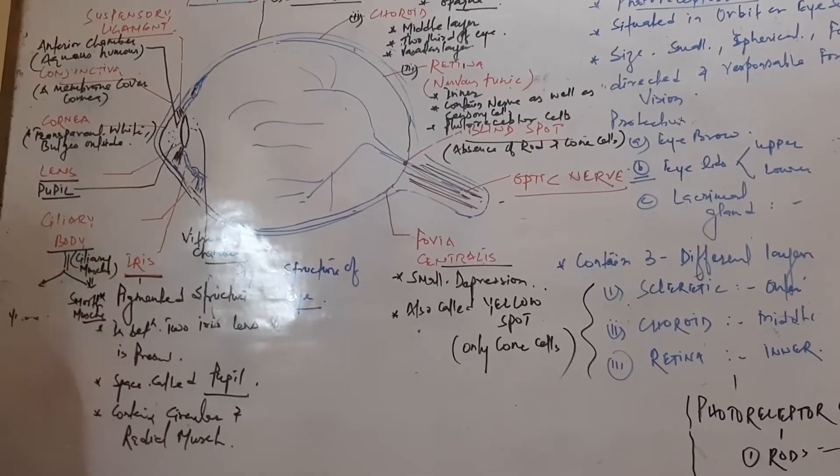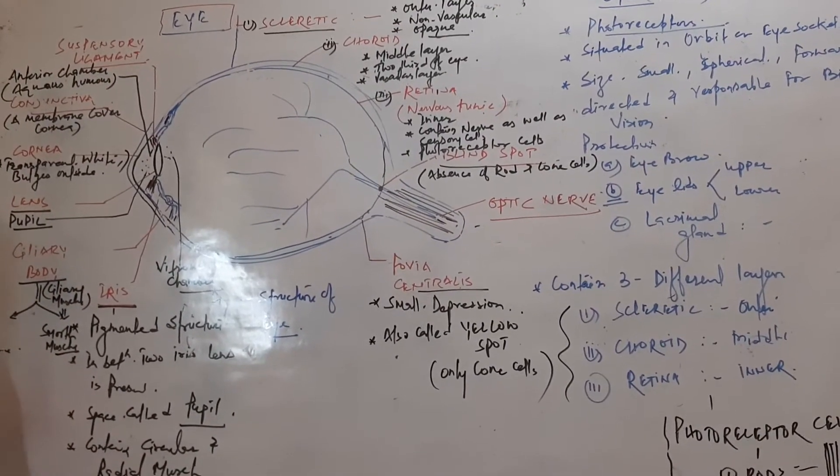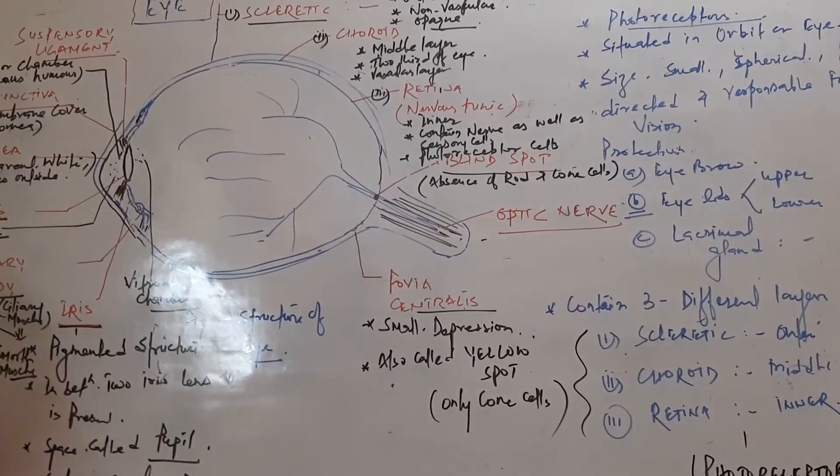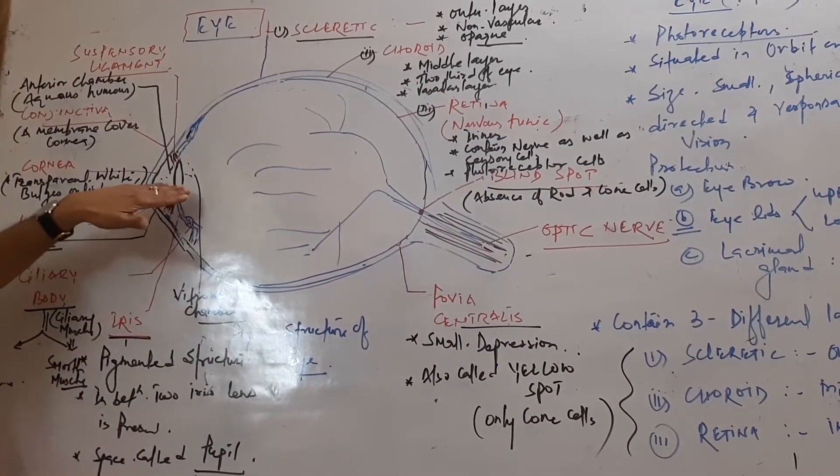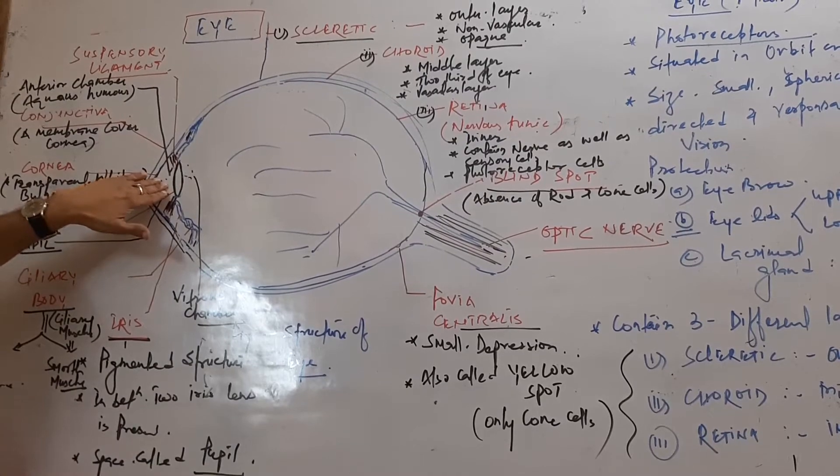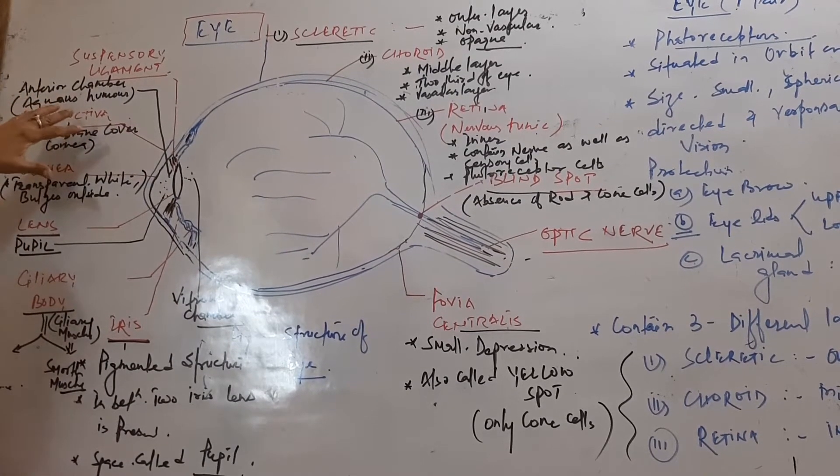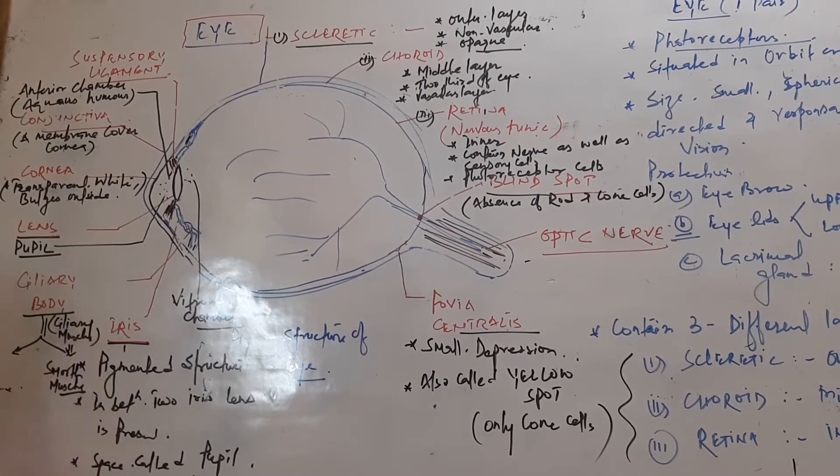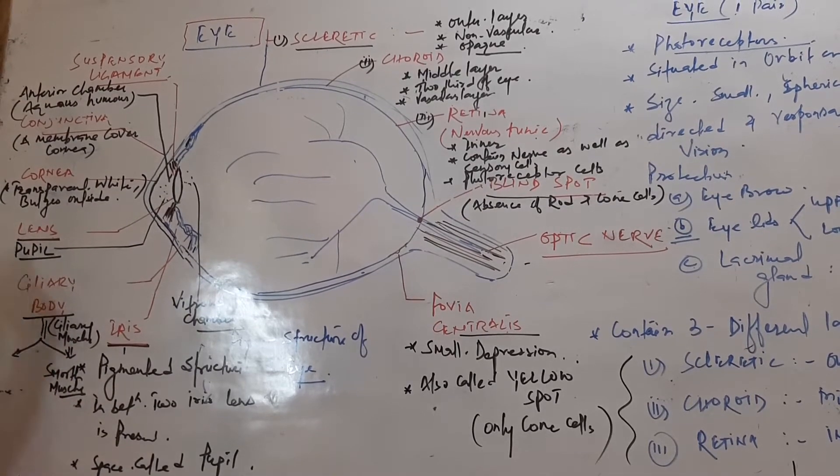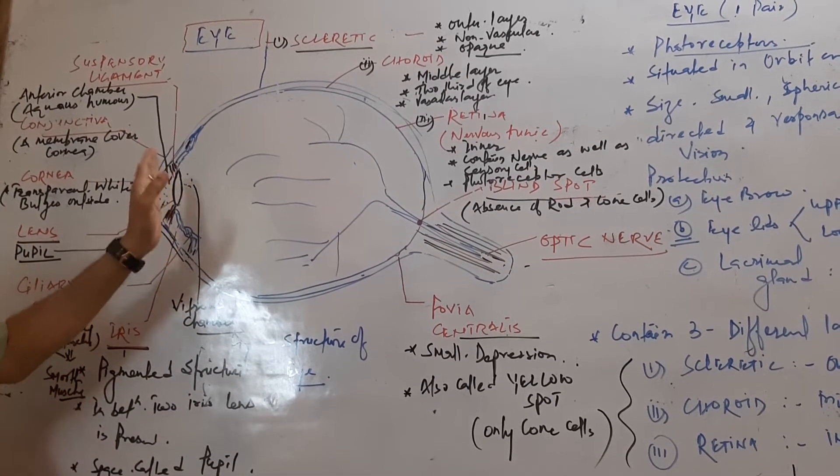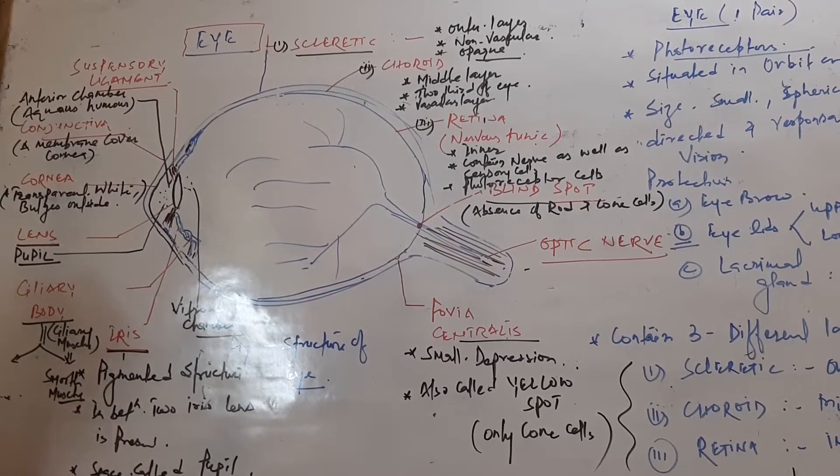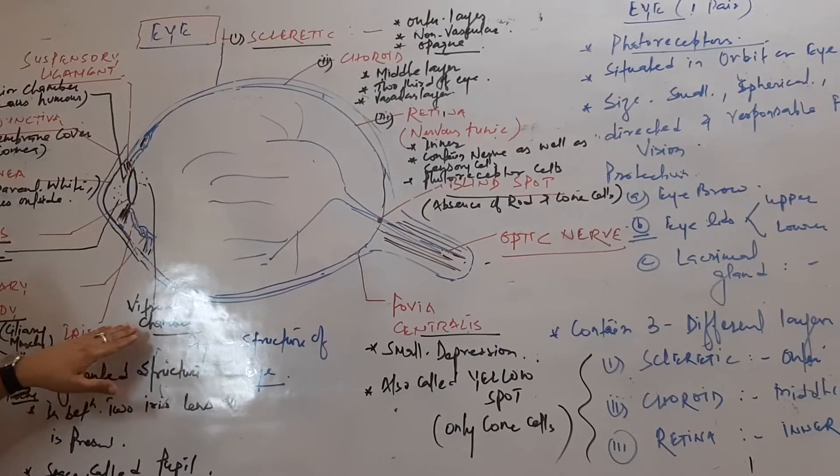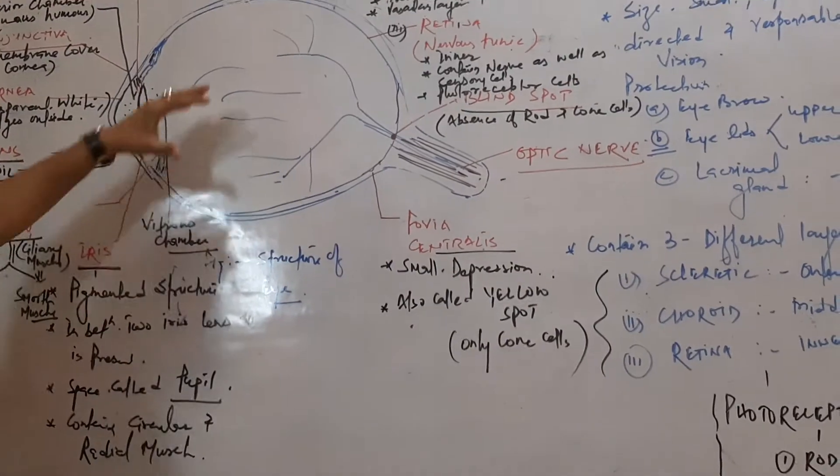In the center of the iris, a space called pupil helps maintain the intensity of light and controls the amount of light entering the eye. Above the lens, a chamber is present called anterior chamber filled with aqueous humor. The chamber behind the lens is called vitreous chamber as it contains vitreous humor.